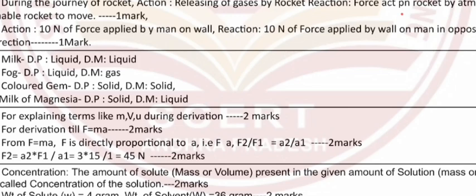When a man applies 10 newtons of force on a wall: action is the 10-newton force applied by the man on the wall; reaction is 10 newtons of force applied by the wall on the man in the opposite direction. Question 19: Fog — dispersed phase: liquid, dispersion medium: gas. Colored gemstone — dispersed phase: solid, dispersion medium: solid. Milk of magnesia — dispersed phase: solid, dispersion medium: liquid.